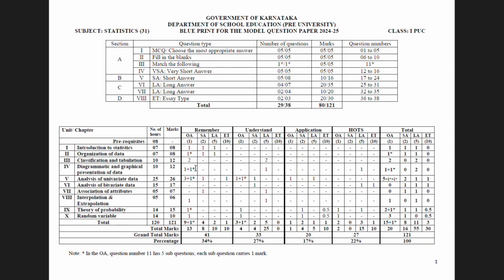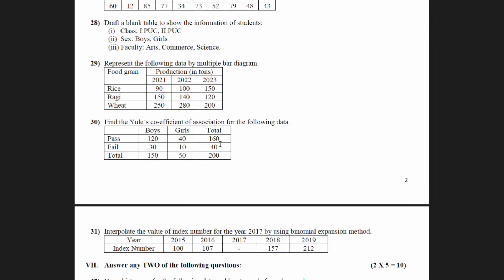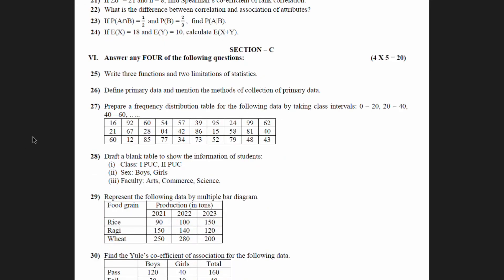Let me take you to Section C as well as the blueprint simultaneously so that you can get a clear idea. Observe here — you have the third chapter, Classification and Tabulation. In the long answer section you have two questions, and long answers each carry five marks, so here you have 10 marks in your hand. Now let us observe the question paper: in Section C, the third question is about a frequency distribution.